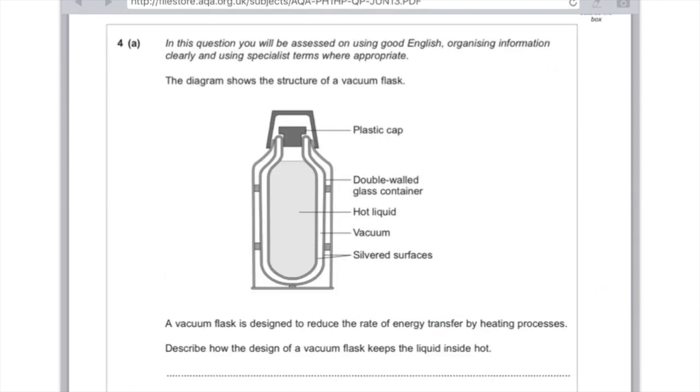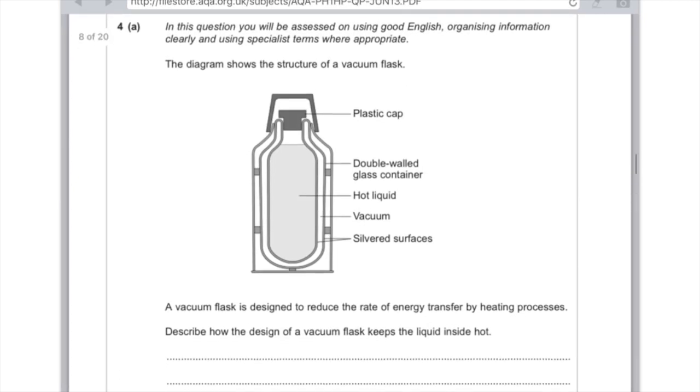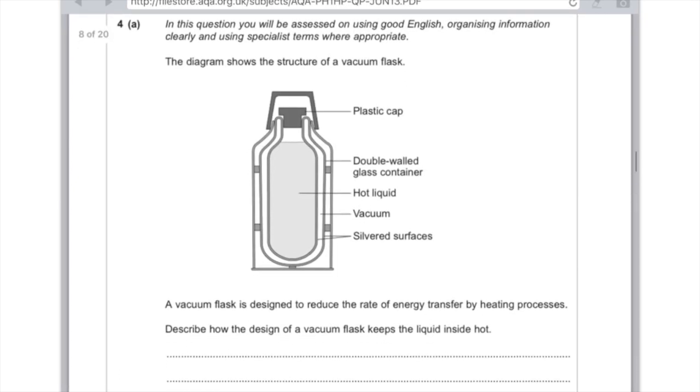Use good English. The diagram shows the structure of a vacuum flask. A vacuum flask is designed to reduce the rate of energy transferred by heating processes. Describe how the design of a vacuum flask keeps the liquid inside hot. Worth six marks, so definitely worth getting to grips with. Whatever you say, you need to link the flask adaptation with whether it prevents conduction, convection, or radiation.